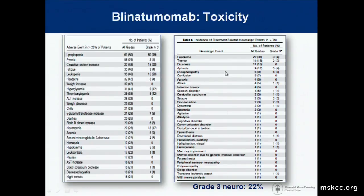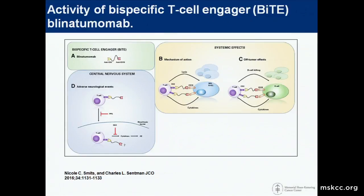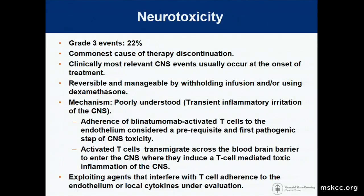This is generally reversible, but it can present as encephalopathy, seizure activity, ataxia, and confusion. The bispecifics are active but have central nervous system toxicity — the mechanism of which Dr. Maloney touched on, and I think it's still not entirely clear. There have been attempts to block T-cell entry into the blood-brain barrier. Dexamethasone can abrogate some of this toxicity, and it's generally managed by withholding infusion and using dexamethasone. Whether the CNS effect is an IL-6 effect or a direct T-cell effect causing endothelial binding, we're still sorting that out.